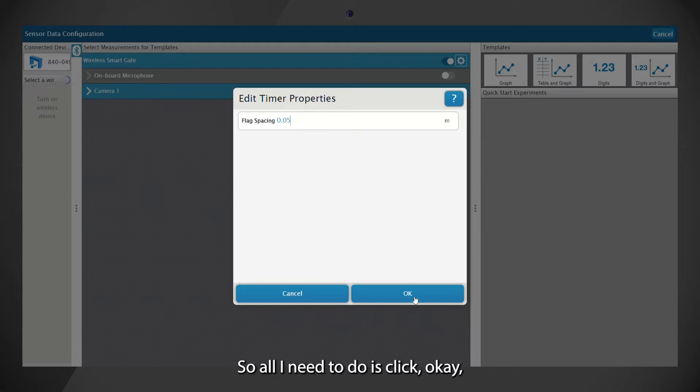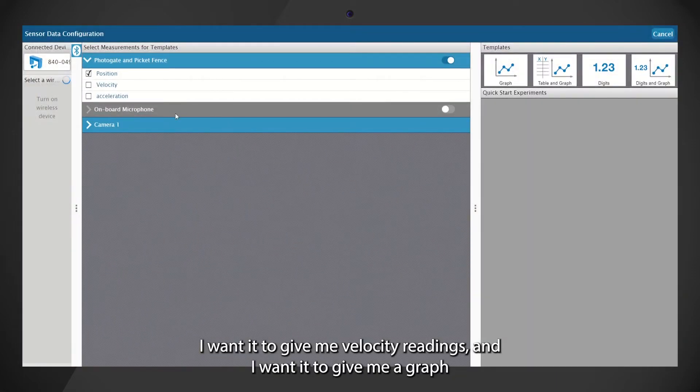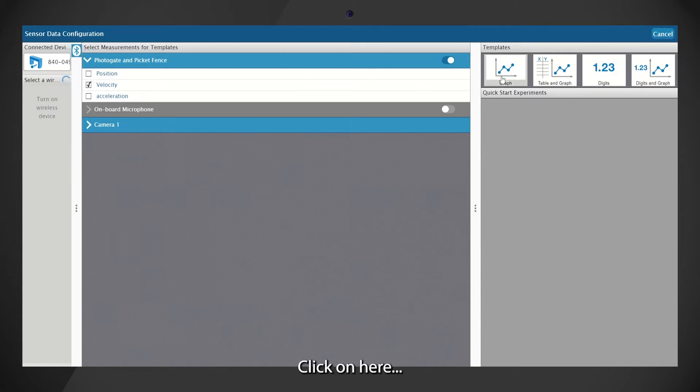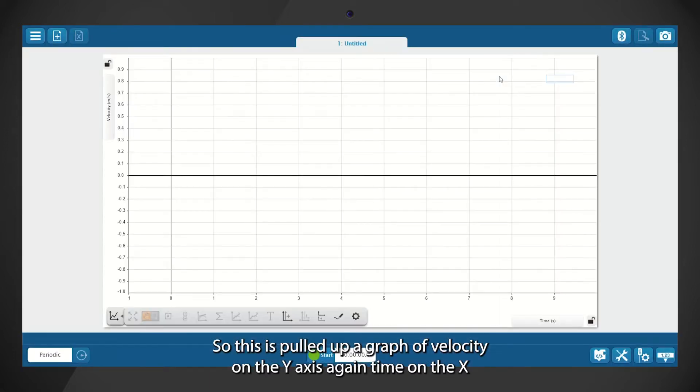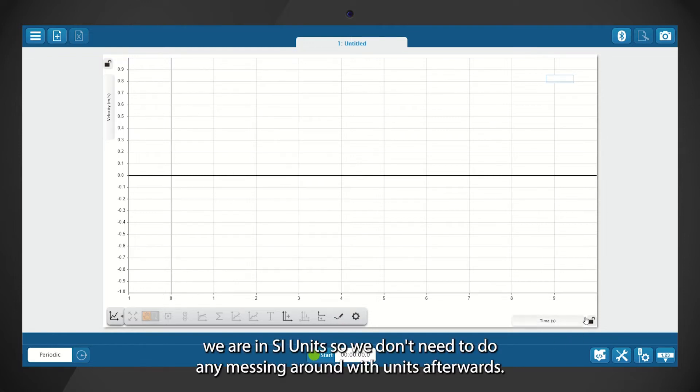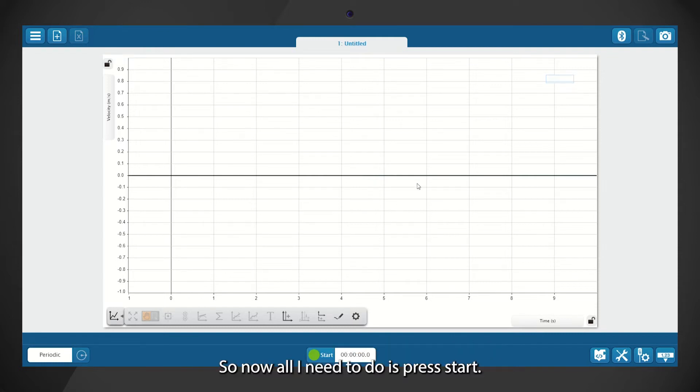So we've got 0.05 meters here which is equivalent to five centimeters. I click OK. I want it to give me velocity readings and I want it to give me a graph. So this has pulled up a graph of velocity on the y-axis against time on the x. We are in SI units so we don't need to do any messing around with units afterwards.